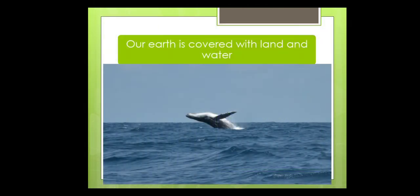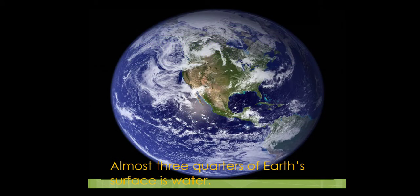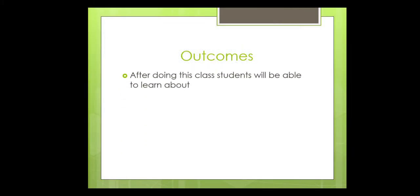You learned that our earth is covered with land and water. Now almost three quarters of earth's surface is water. So water is very much essential for our life. All animals need water to survive. We get water from different sources. In today's class, we will learn about the different sources of water. So let's start.